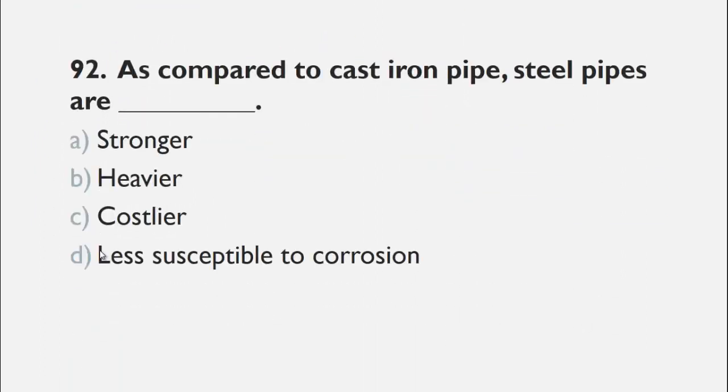MCQs number 92 is, compared to cast iron pipes, steel pipes are a stronger, b heavier, c costlier, d less susceptible to corrosion. The right choice for this question is a stronger, because steel pipes are more stronger than cast iron pipes.